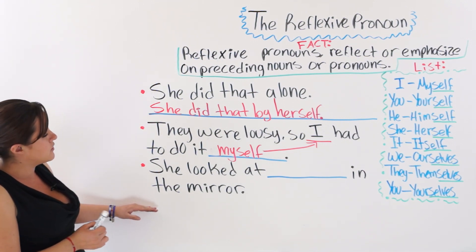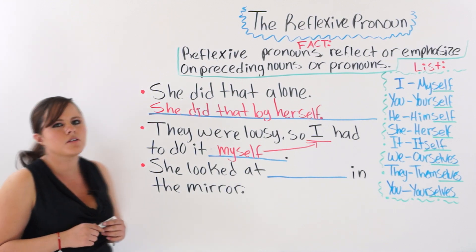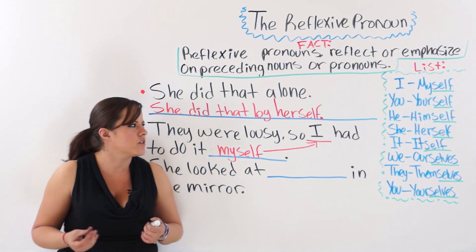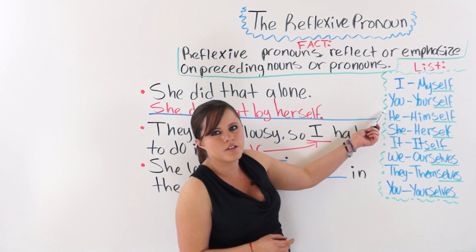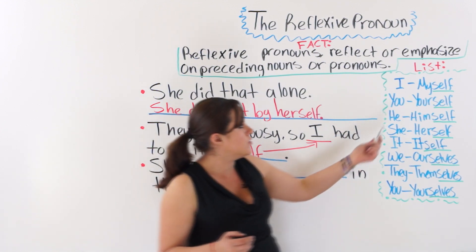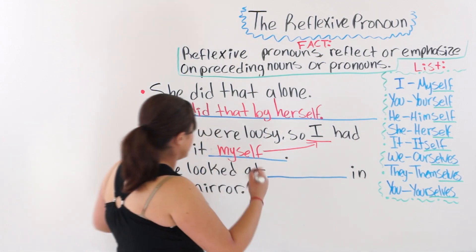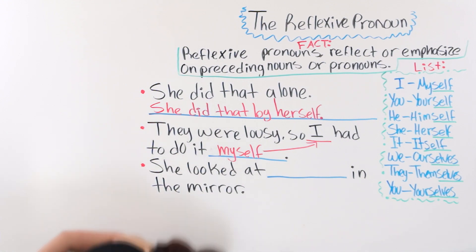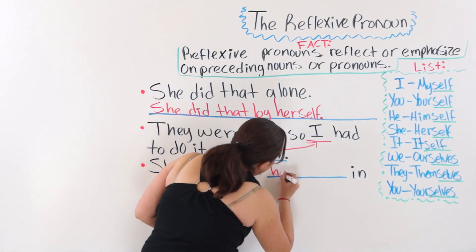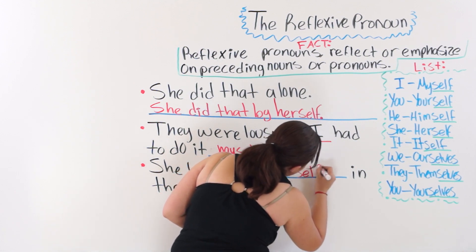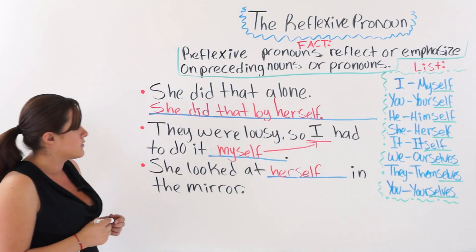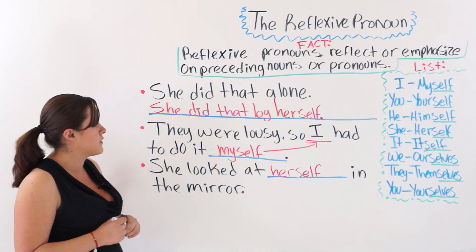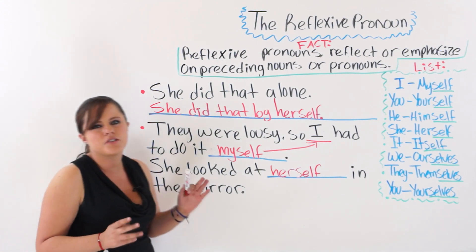The third one says: she looked at blank in the mirror. When you look in the mirror, what do you see? You see your reflection — you see yourself in the mirror. So the answer is: she looked at herself in the mirror.